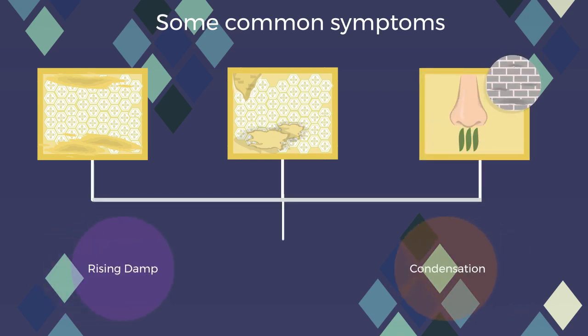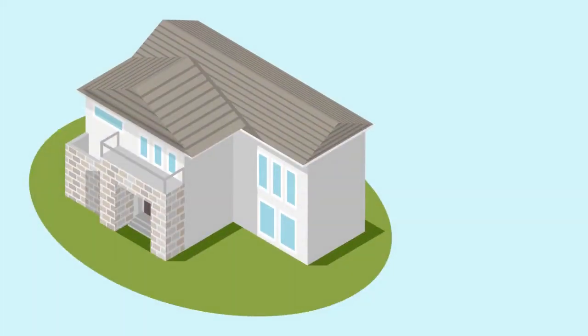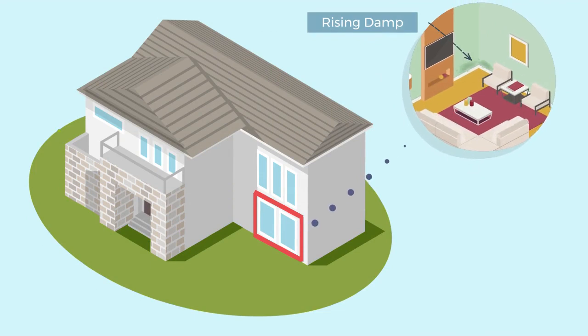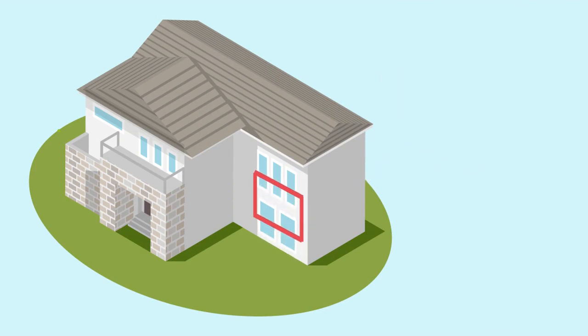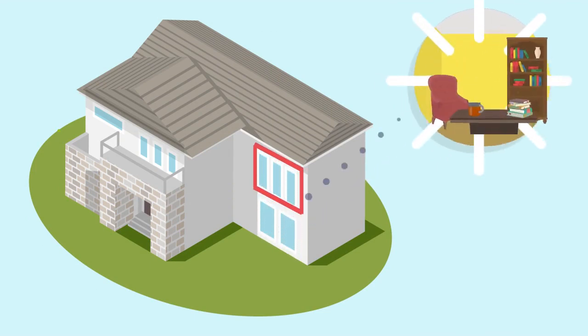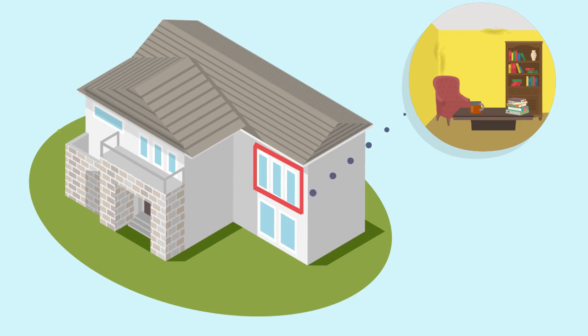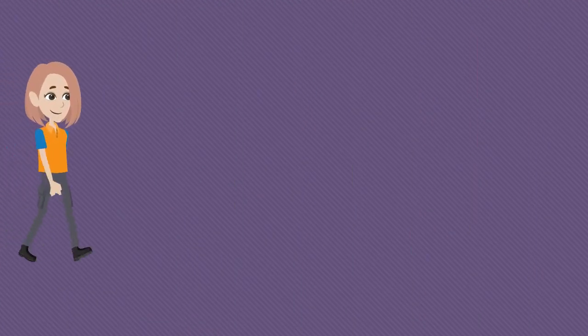However, rising damp will only affect ground floor walls, whereas damp stains around the ceiling or on higher levels of the property are likely to be condensation or penetrating damp. Rising damp does have some characteristic traits that can help you identify if it is the cause of your damp problems.